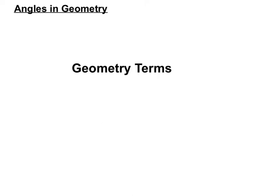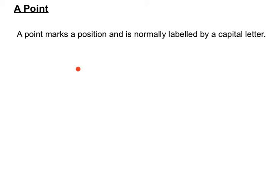So geometry terms, let's remind ourselves of a few. A point is a dot. It marks the position of something and is normally labelled by a capital letter. So we'd say that one there is the point A.